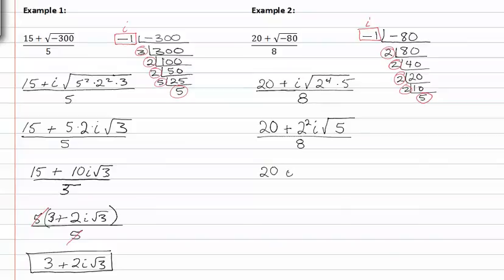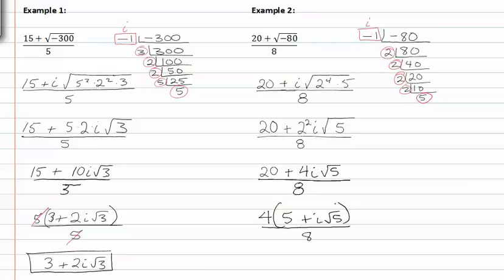Rewriting with the exponents, I get twenty plus four i root five over eight. Now I'm going to pull out the common factor in the numerator so I can reduce my fraction. The common factor is four and I get five plus i root five over eight. I can reduce the four out of the numerator and denominator and I'm left with two in the denominator.